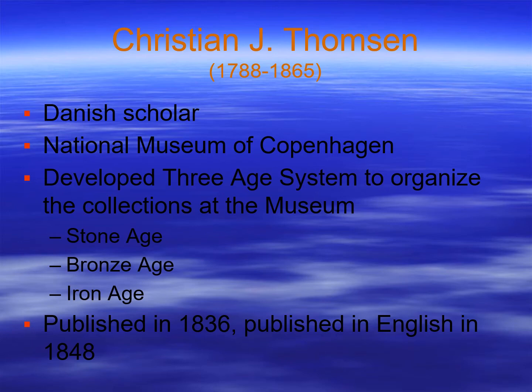During this period, Christian J. Thomsen made the contribution of developing the three-age system. He was a Danish scholar who worked at the National Museum of Copenhagen and was trying to organize the collections so they made sense. He noticed there were three kinds of sites: sites with very old stone tools, sites with bronze tools, and Iron Age sites that were more recent. He published this in 1836, with an English edition in 1848. The three-age system was an important contribution.